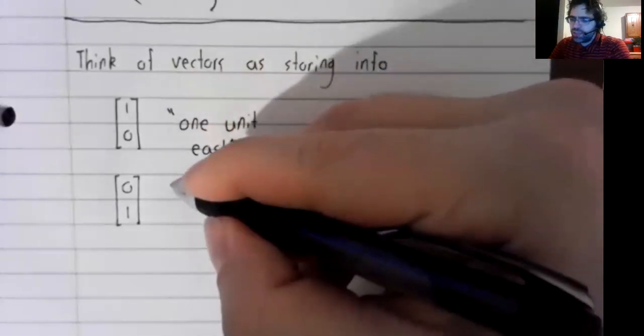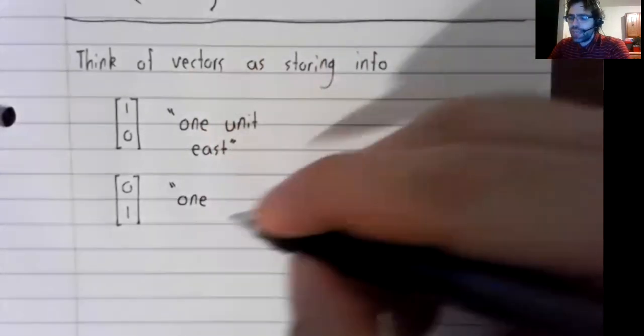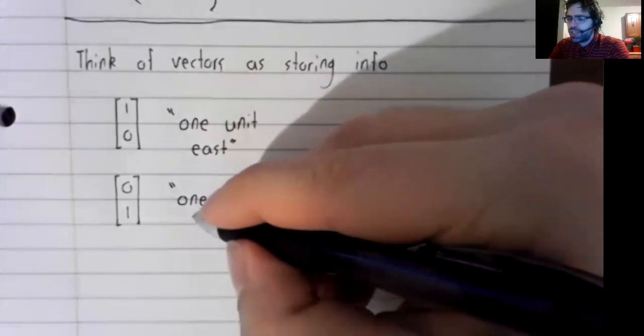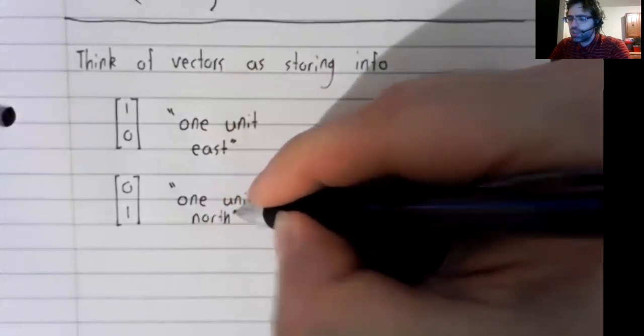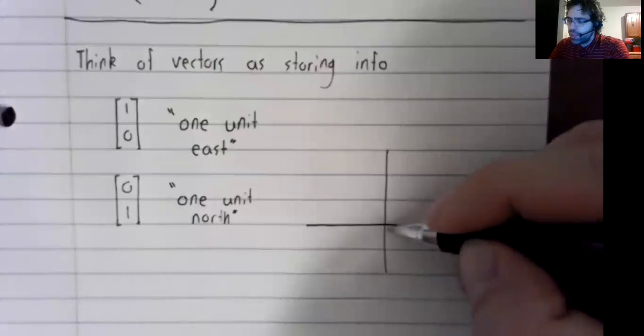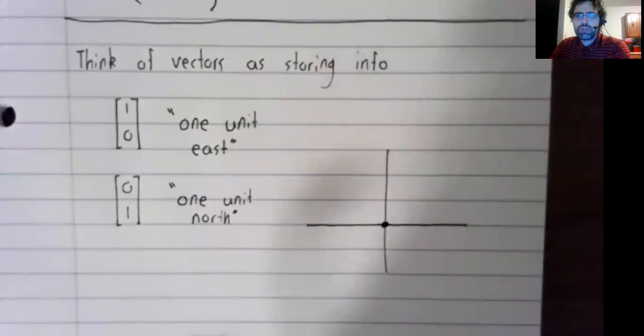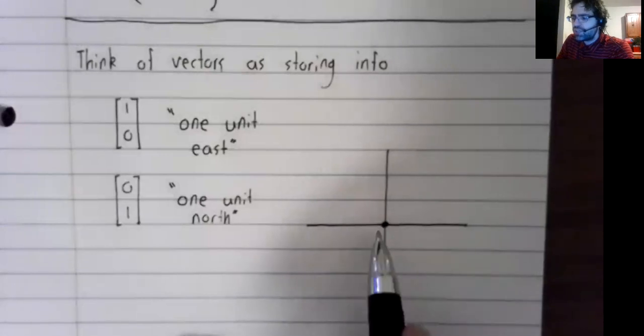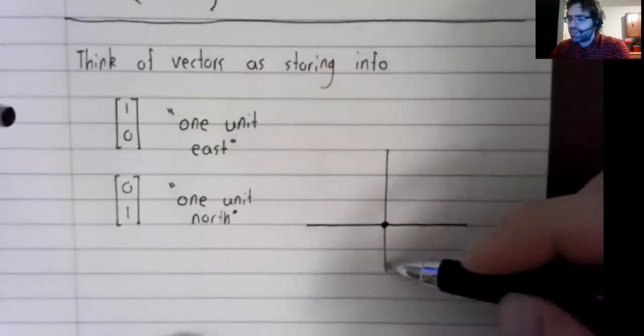And this vector will store the information one unit north. Where east and north are being measured relative to the origin. This is east, this is west, this is north, this is south.